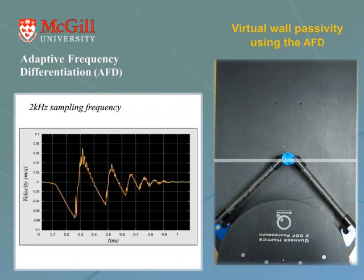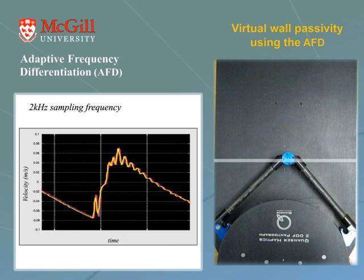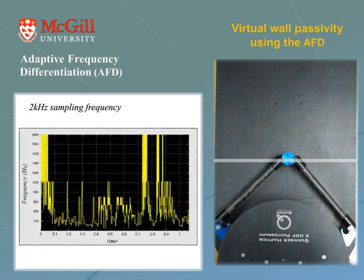This figure compares the filtered velocities from the AFD in yellow and a low-pass filter in pink during the experiment. Zooming into this data shows that the AFD estimated the values with a shorter time delay. We can also see how the frequency of differentiation was changing for the AFD during the experiment.